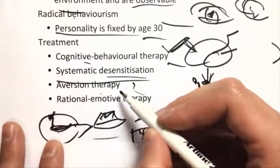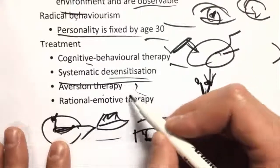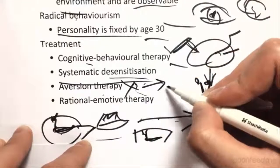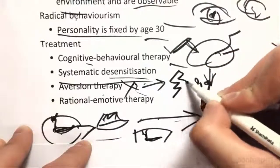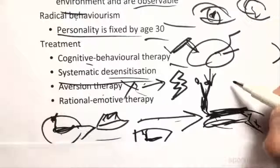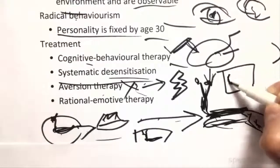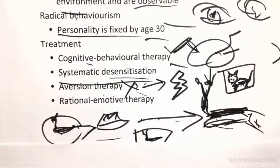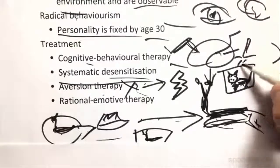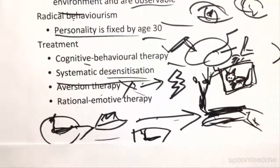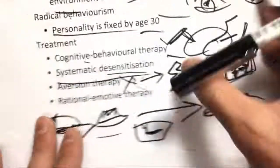Aversion Therapy is when you want to extinguish a behaviour — you associate it with something negative. For example, if you want someone to stop drawing pictures of cats, every time they draw a cat you slap their elbow, which hurts them, so they associate the pain with that behaviour and slowly stop doing it.